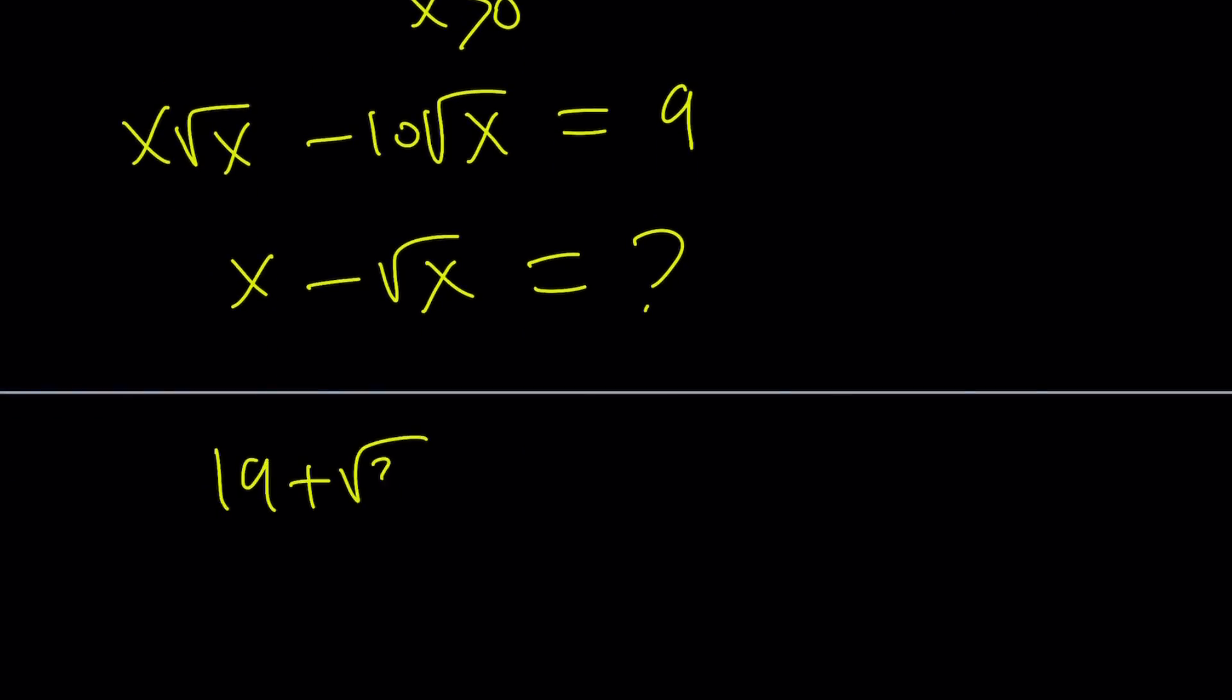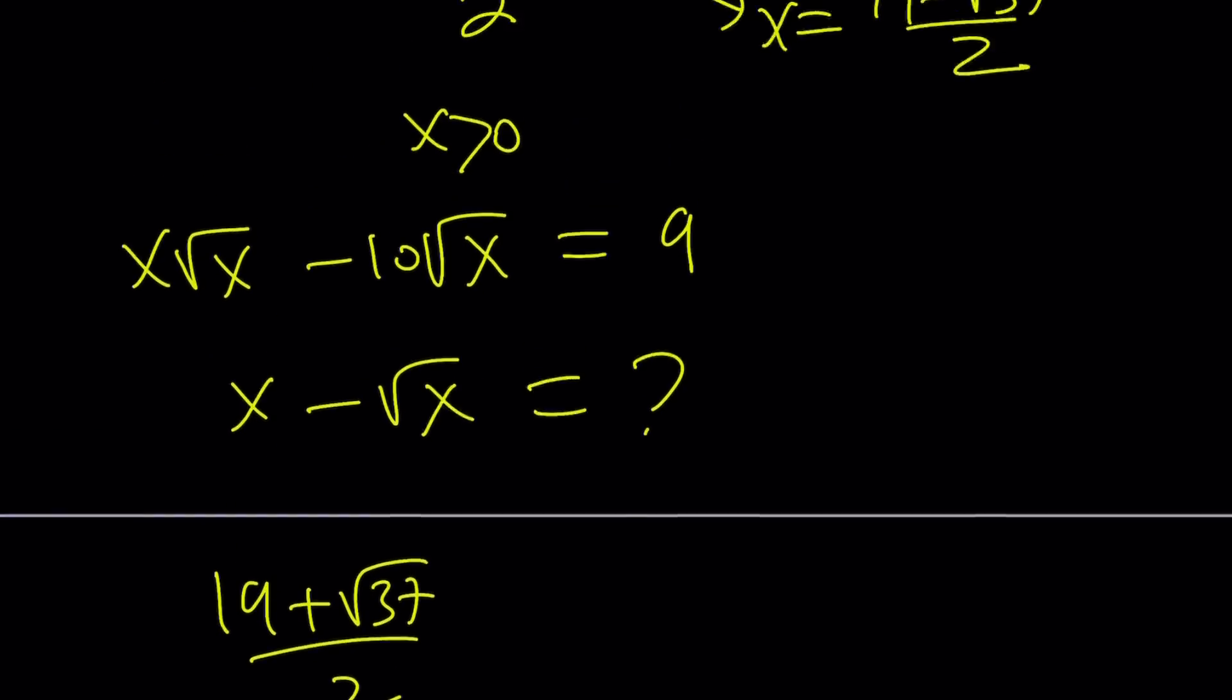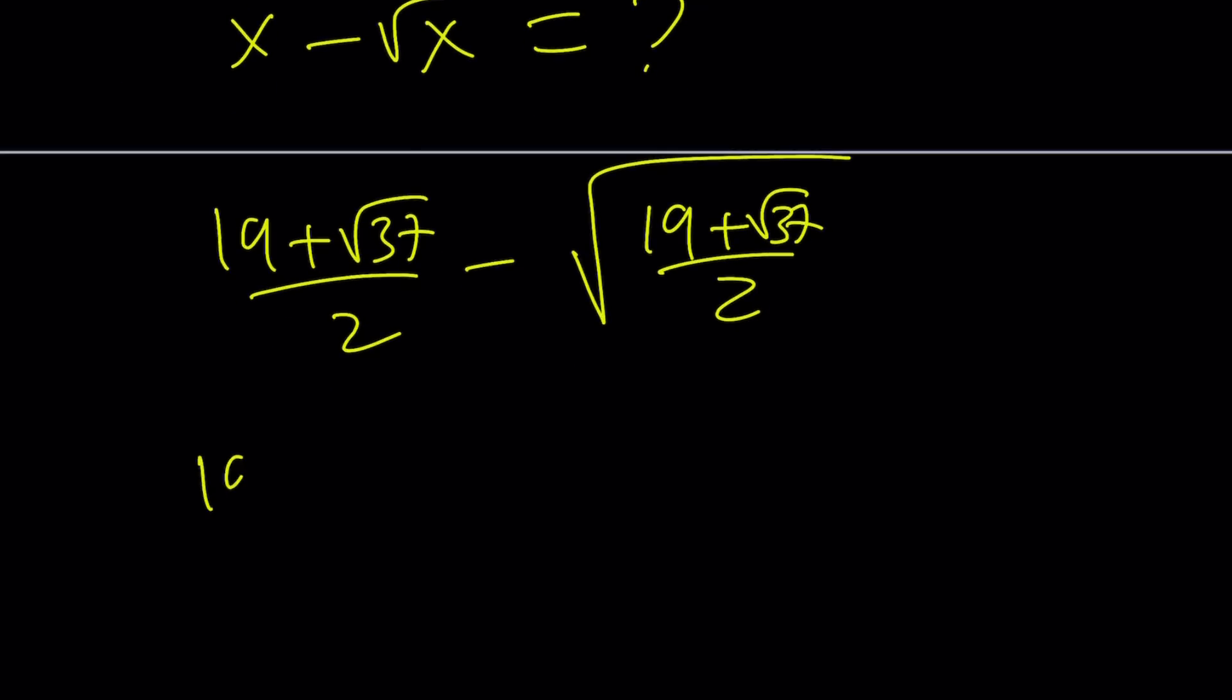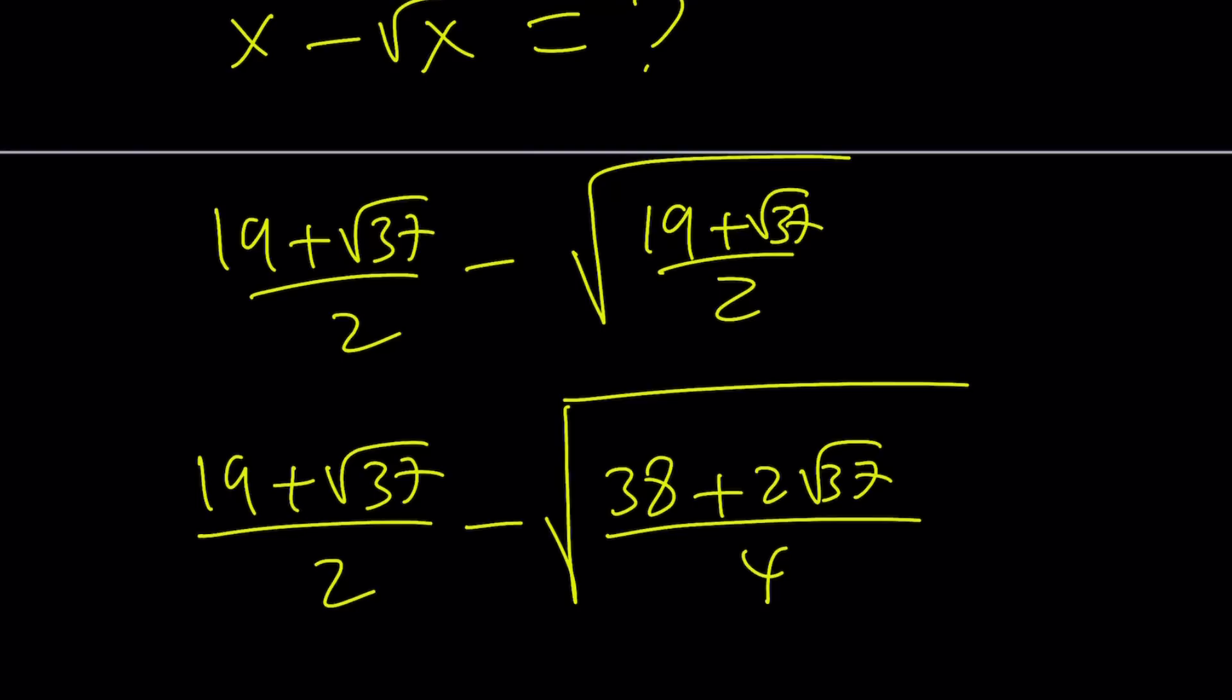19 plus root 37 over 2. And that minus the square root of that number. Well, how do you square root that number? Not too hard. I'll show you a really nice trick that will simplify the problem a great deal. Multiply the top and the bottom by 2. Remember, this radical contains both. So write it as 38 plus 2 root 37 divided by 4. Now notice that at the top, we get two numbers whose product is 37 and whose sum is 38. Those numbers are 37 and 1.